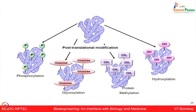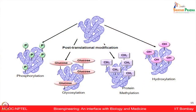Proteins can further get modified in the process of post-translational modification. If phosphate residues are attached, that process is known as phosphorylation. If sugar moieties like glucose are attached, that is the process of glycosylation. If methyl groups are attached, that is protein methylation. And if hydroxyl groups are attached, that is known as hydroxylation. Many proteins undergo post-translational modification at some of their amino acid residues after synthesis. These PTMs are also highly relevant for various physiological processes — for example, many signal transduction cascades are governed by phosphorylation.